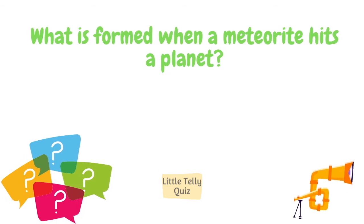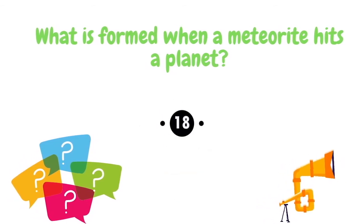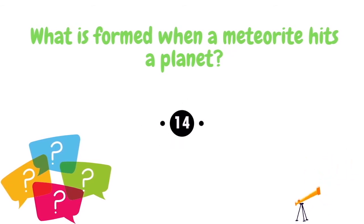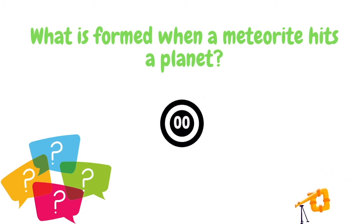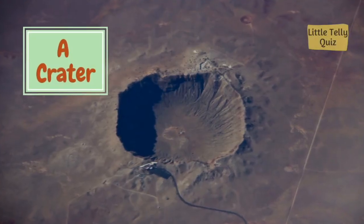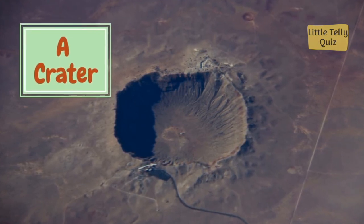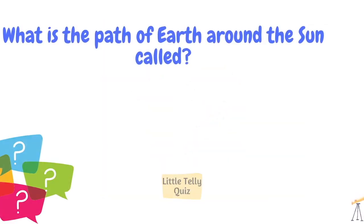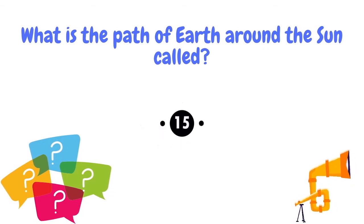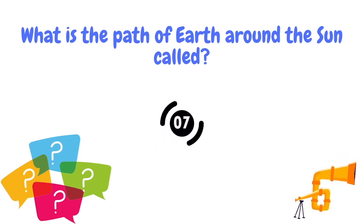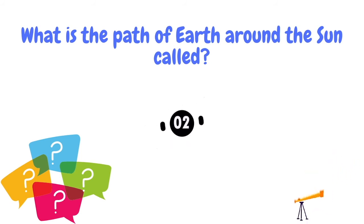What is formed when a meteorite hits a planet? The answer is a crater. What is the path of Earth around the sun called? The answer is orbit.